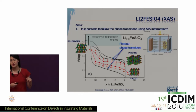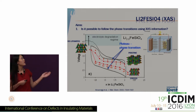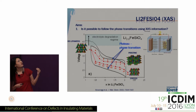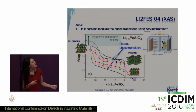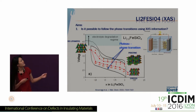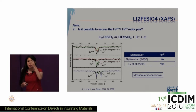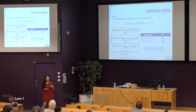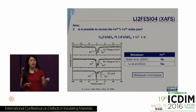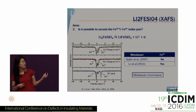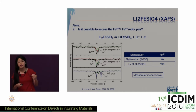Our first aim is to follow the phase transitions from pristine to delithiated and back. Our second aim addresses a topic of ongoing debate: is it possible to access the Fe3+ to Fe4+ oxidation step? If we can reach Fe4+, that would be really beneficial for the battery material, because it would allow us to reach higher voltage and increase capacity.